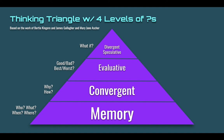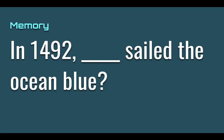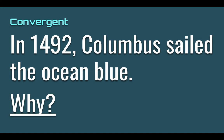By way of example, here's a memory question: in 1492, who sailed the ocean blue? That was Columbus — kids just have to recall that. A convergent question: in 1492, Columbus sailed the ocean blue — why? The three G's: gold, God, and glory. We've put our facts together to come to a correct answer. You might bump that up and ask what's the most important of those three — gold, God, or glory — but kids are still arriving at a more or less predetermined answer.